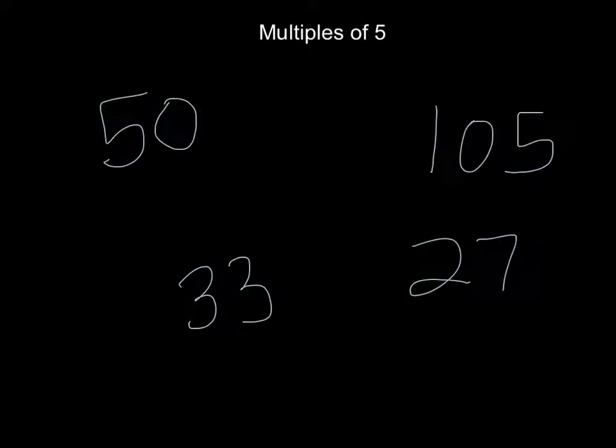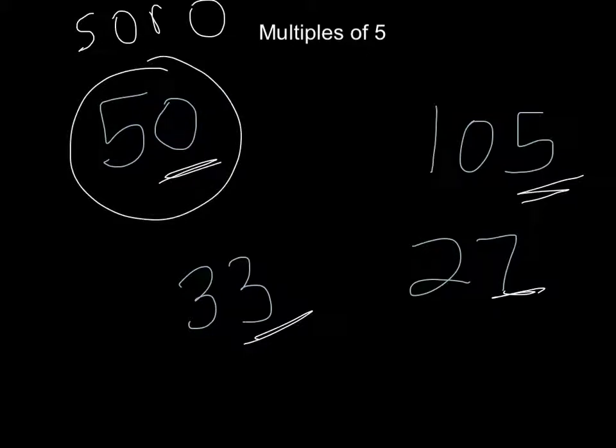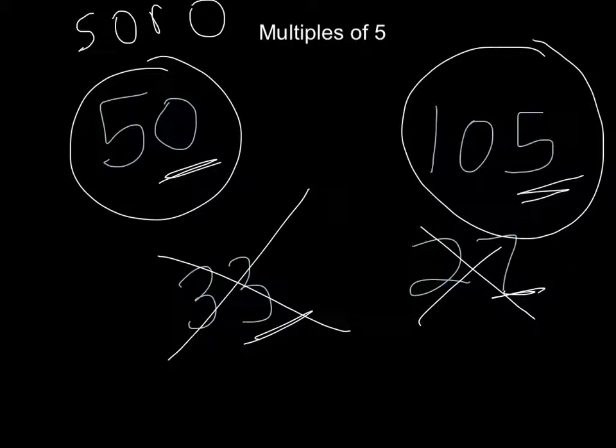Next, I know a number is a multiple of 5 if the number in the ones place is a 5 or a 0. That means 50 is a multiple of 5, 33 is not, 27 is not, and 105 is.